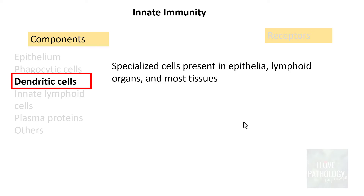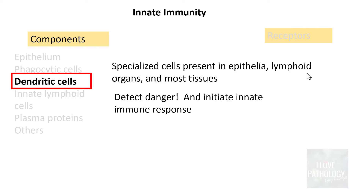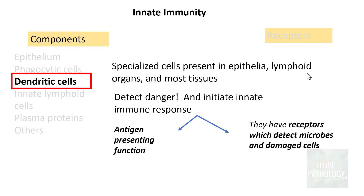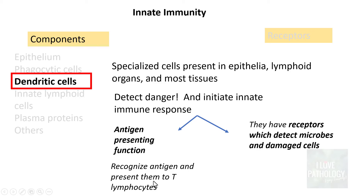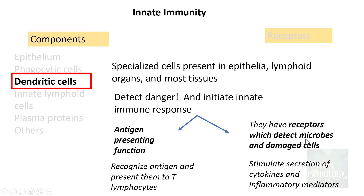Dendritic cells are specialized cells present in the epithelium, lymphoid organs, and most other tissues. Their most important function is detecting danger and initiating an immediate innate immune response. They act as antigen-presenting cells — they recognize antigens of various pathogens and present them to T lymphocytes. Dendritic cells also have receptors that detect microbes and damaged cellular components, stimulating secretion of various cytokines and inflammatory mediators to tackle those microbes.